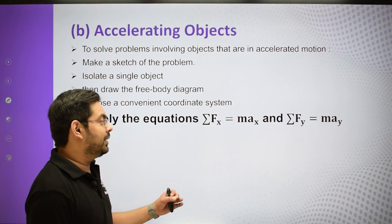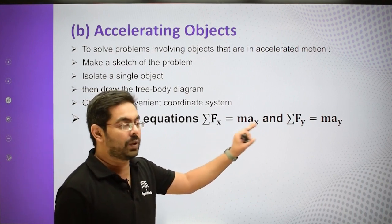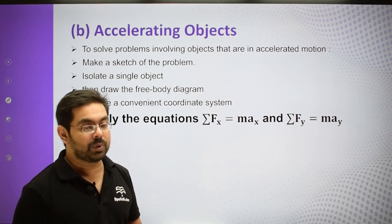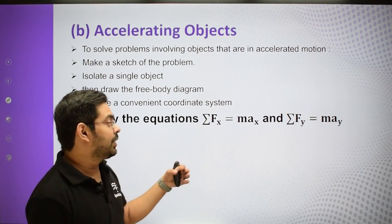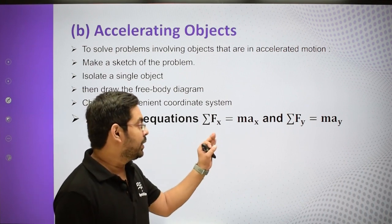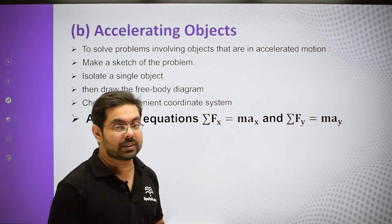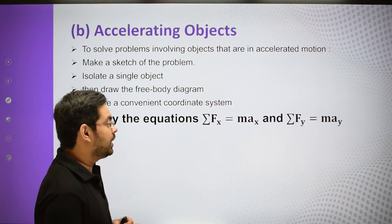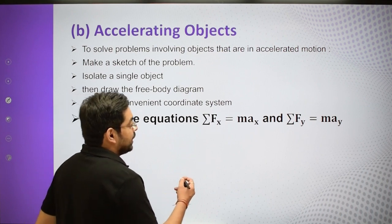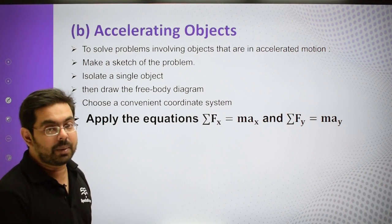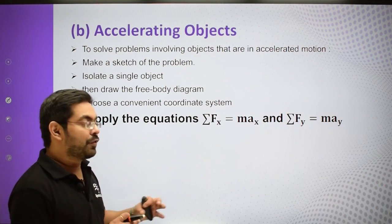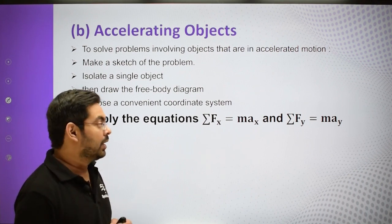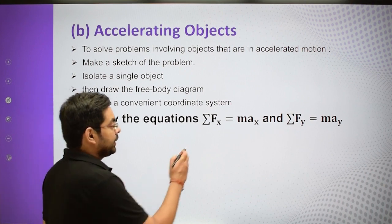In the equilibrium condition, we used to write Fx = 0 and Fy = 0 because acceleration was zero. But if the body is accelerating, then we write Fx = m·ax and Fy = m·ay — mass into acceleration in that direction. We equate the net force to mass times acceleration.